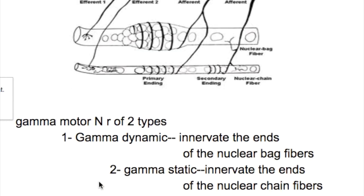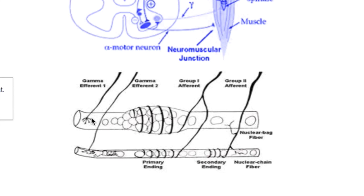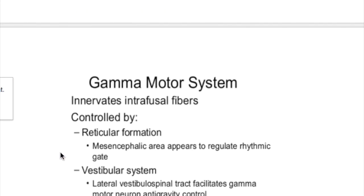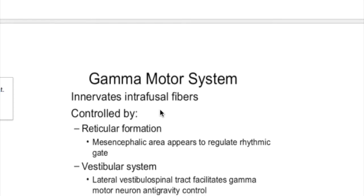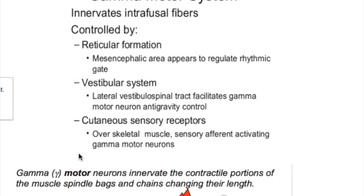The gamma motor neurons are of two types: gamma dynamic, which innervates the ends of the nuclear bag fibers, and gamma static, which innervates the ends of the nuclear chain fibers. Gamma motor neurons are inhibited by the pyramidal corticospinal tract and excited by the reticular activating system. They are also stimulated by the vestibular spinal tract and by cutaneous sensory receptors — noxious stimuli over the skin cause stimulation of gamma motor neurons.